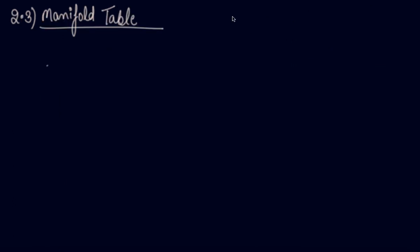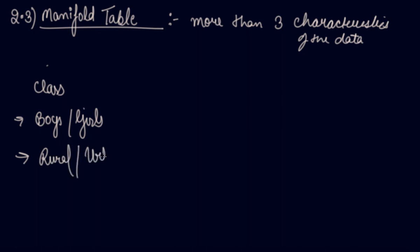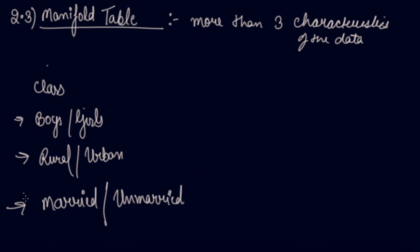The manifold table is a table which shows more than three characteristics of the data. For example, you divide students by class, then by sex (boys and girls), then by locality (rural or urban), and then further classify as married or unmarried. So here you have classified data using four characteristics — more than three. Whenever you show more than three characteristics of the data in the table, it is known as a manifold table. I hope you have understood these kinds of tables.